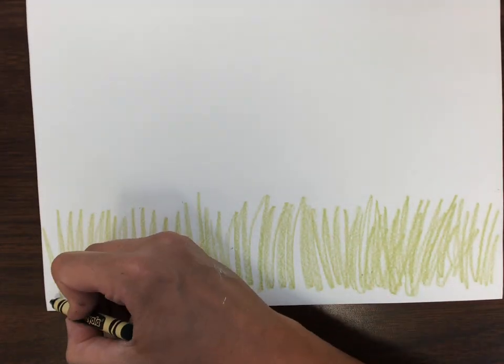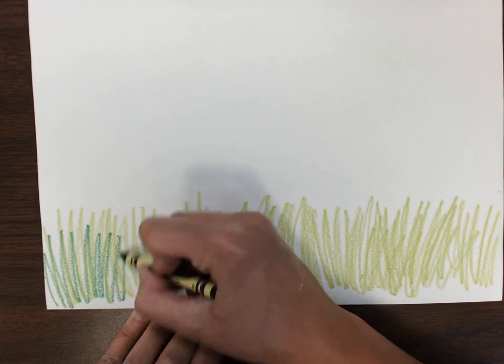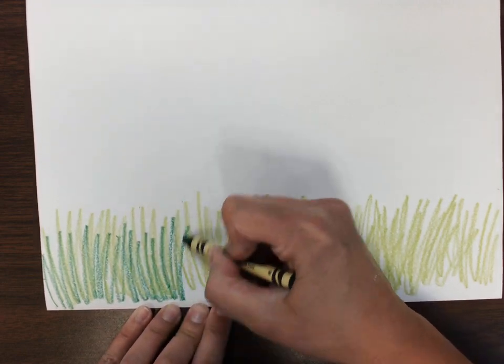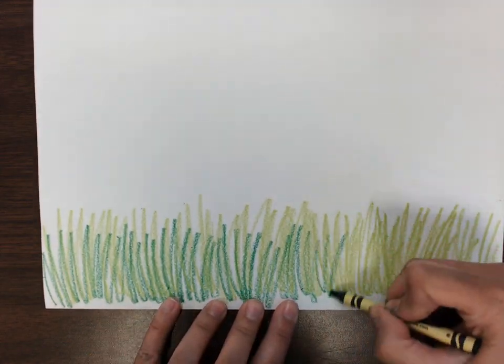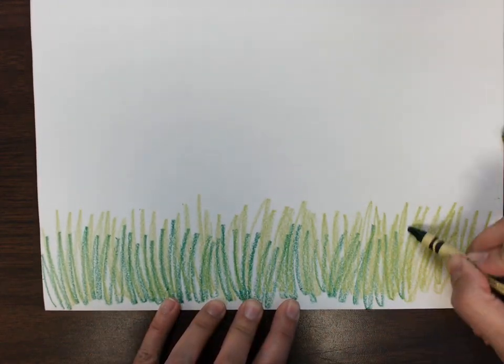Now I'm going to come on top with a dark green up and down because this creates the texture of grass. And now I also have two values, light green and dark green.